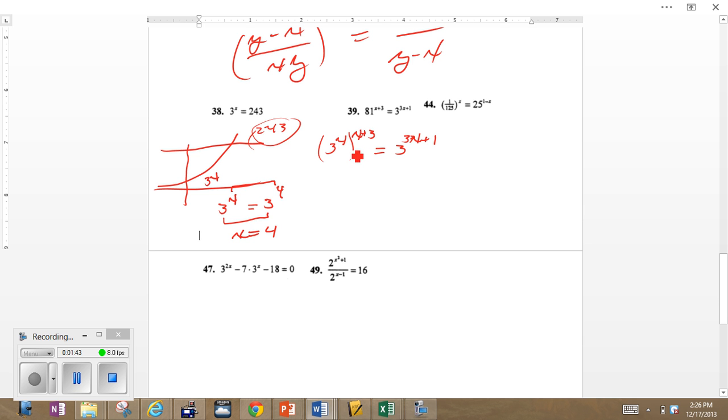So now if we distribute this, we get 3 to the 4x plus 12 is equal to 3 to the 3x plus 1. Well again, we've managed to equate the bases, so now we can equate the exponents. We yield a very simple 4x plus 12 equals 3x plus 1, implying that x is equal to negative 11.